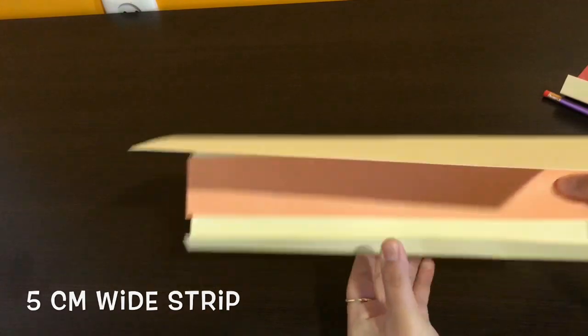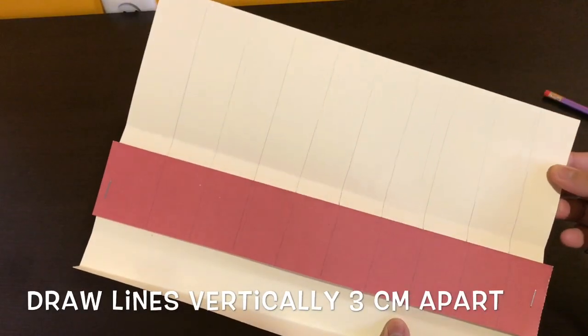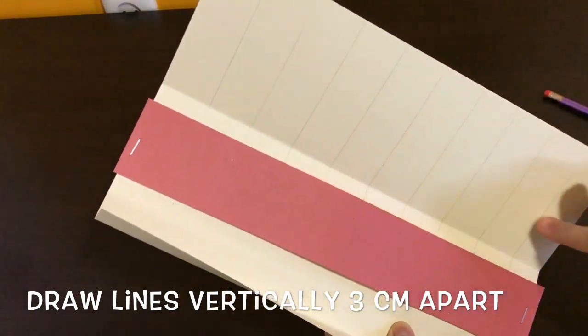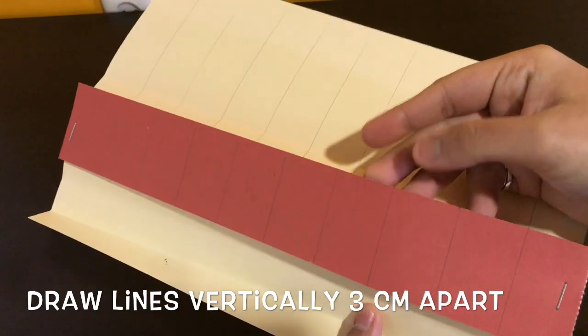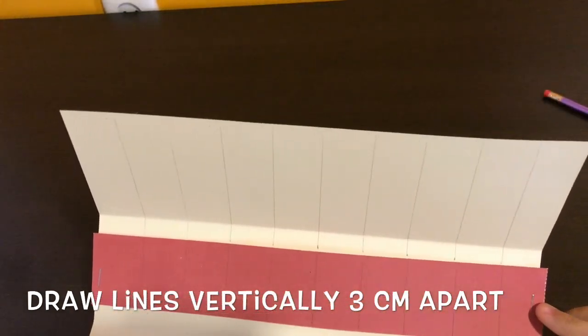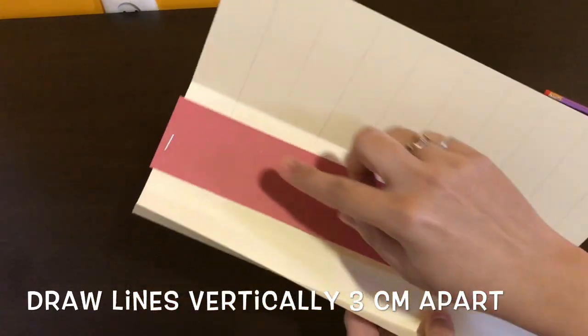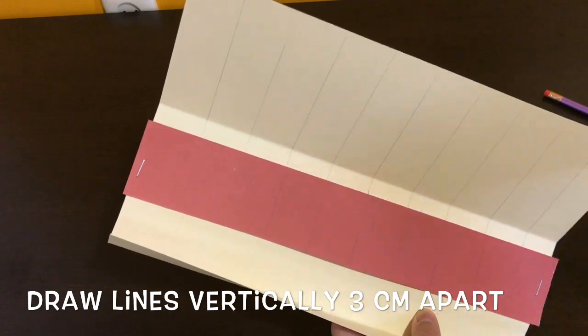The next step: use a pencil and a scale and then make equidistant lines. So what I have done is, if you can see, there are lines even on this strip. And I have just adhered it with stapler but you can do so with glue. And I have kept a distance of 3 cm.